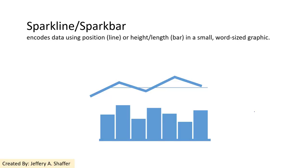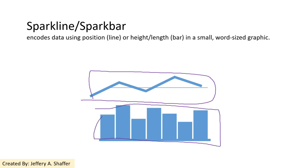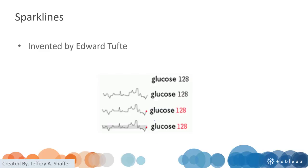We also have sparklines and spark bars. You can consider those as tiny line charts or bar charts the size of text. They are very small word-sized graphics used to add context to numbers. Here is an example with numbers shown without sparklines, and here with sparklines added to show the trends of a variable.